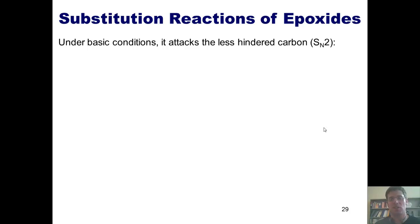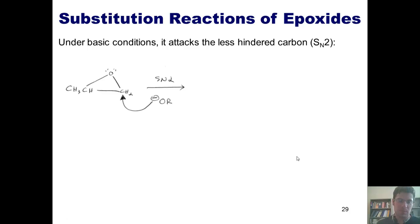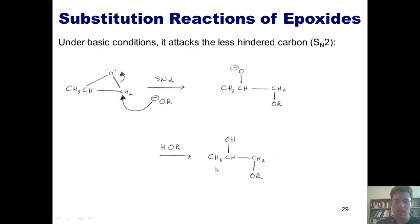Under basic conditions, we see something different. I have my epoxide and there's no proton to protonate it. Instead, my nucleophile directly attacks it SN2 style. If you're a hot alkoxide nucleophile, you'll attack the carbon at the right because it is not flanked by an additional carbon getting in the way. Under basic conditions, the attacking nucleophile attacks the less substituted carbon and pumps these electrons into that oxygen, giving me a negatively charged intermediate. This negative charge eventually gets protonated by another molecule of alcohol to give the product.